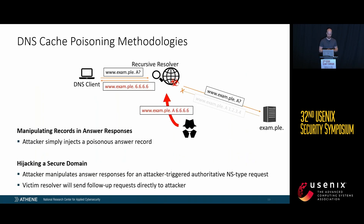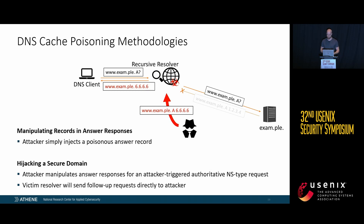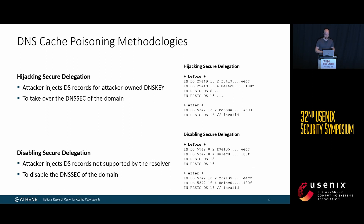For DNS cache poisoning, we constructed four attacks using these vectors. First, manipulating records in answer responses, where the attacker injects a poisonous answer record. Second, hijacking a secure domain, where the attacker manipulates answer responses for an attacker-triggered NS-type request, causing the victim resolver to send follow-up requests directly to the attacker. Third, hijacking secure delegation, where the attacker injects a DS record for an attacker-owned DNSKEY. Fourth, disabling secure delegation, where the attacker injects DS records using algorithms unsupported by the resolver, causing DNSSEC validation to be skipped entirely.